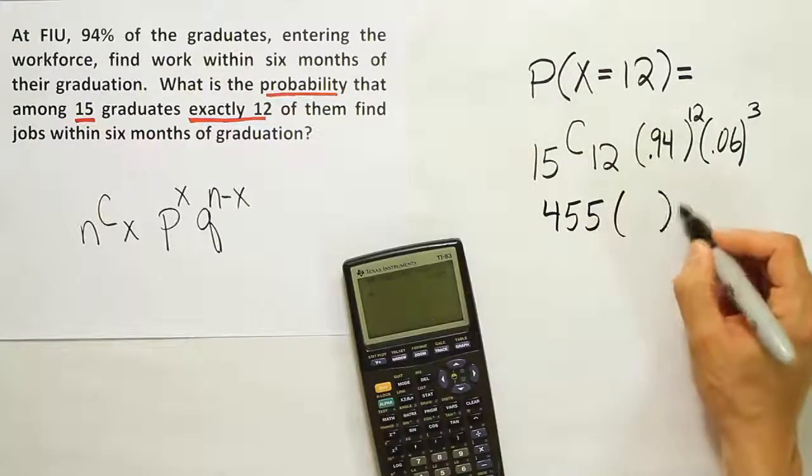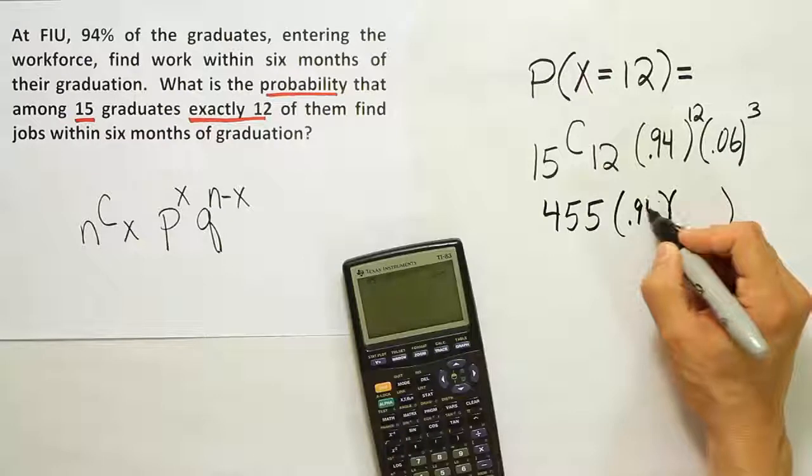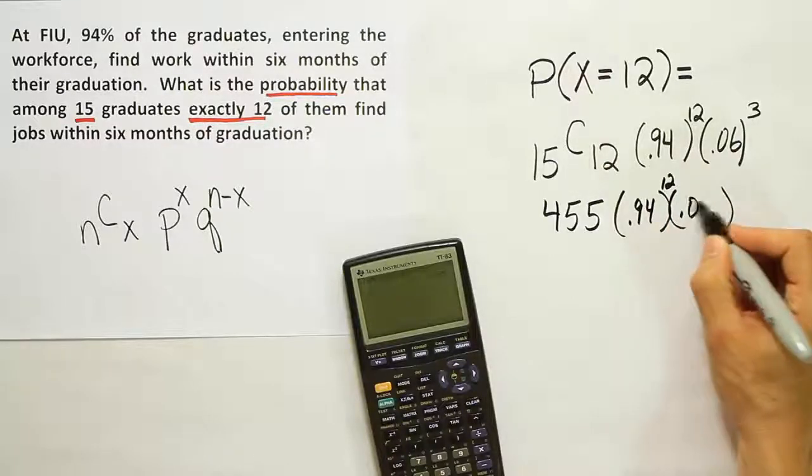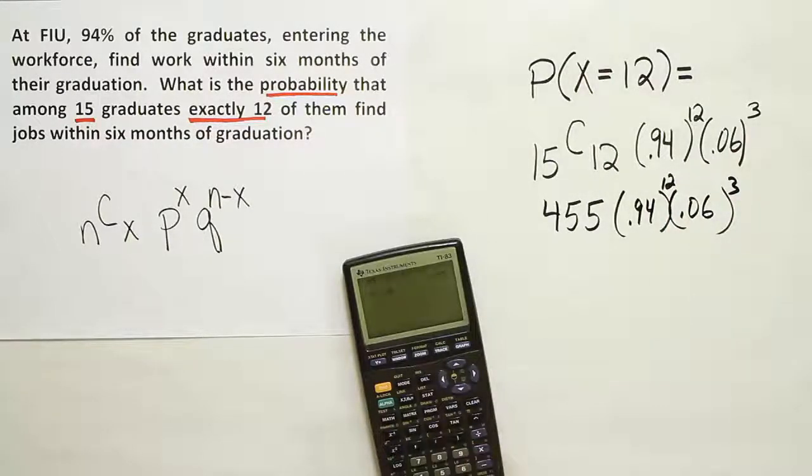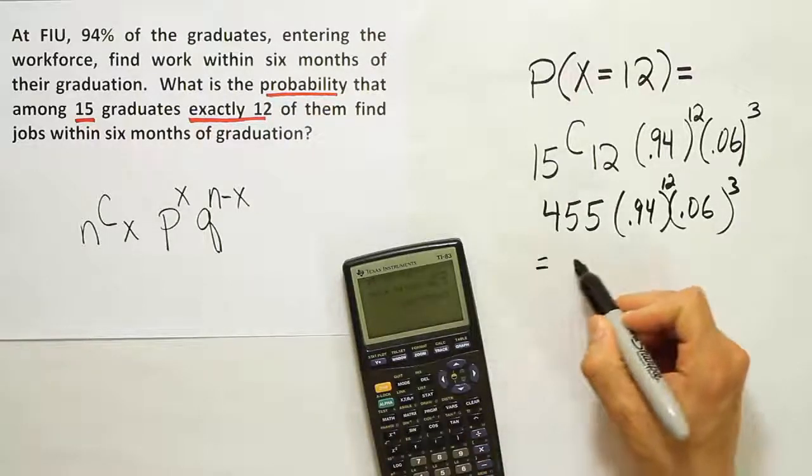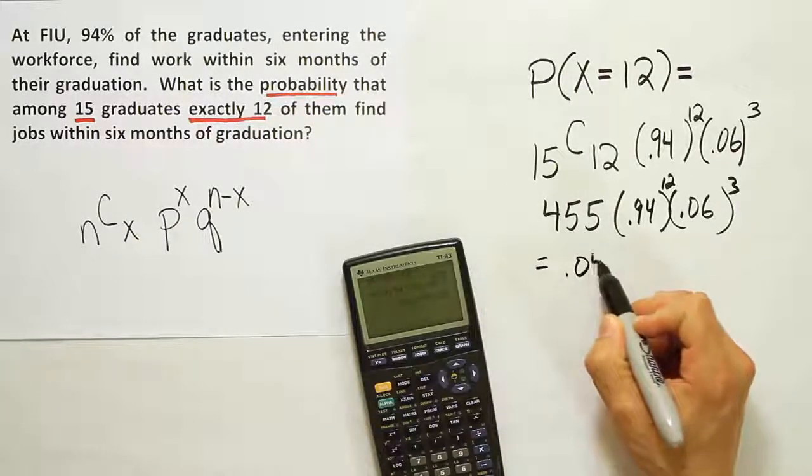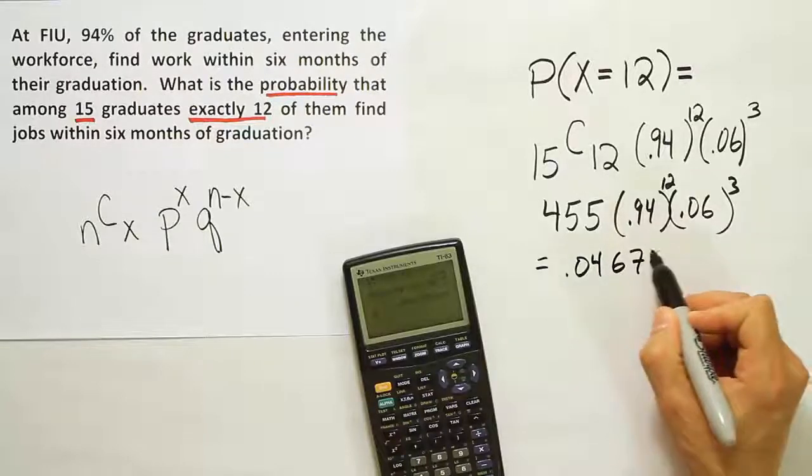And then we multiply by the remaining two quantities. And so that would be times 0.94 to the 12th power times 0.06 to the 3rd. And when we're all said and done, we end up with 0.04677.